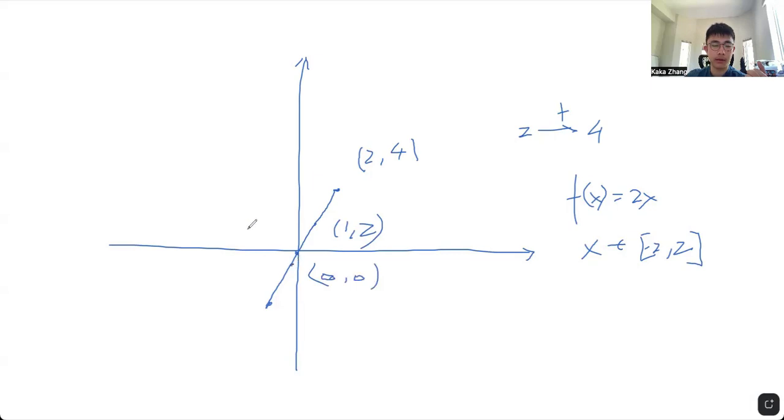And this point is like (-1/2, -1), etc. On the other hand, this symbol (∈) represents 'is in the set.' This means that x can only take values between -2 and 2. And finally, this is called an interval and it represents the set of all real numbers between -2 and 2.